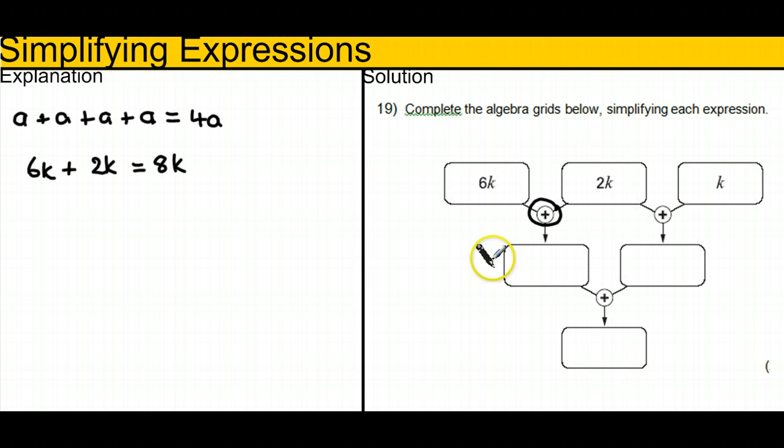Similarly, in the other box we've got 2k plus k, so we've got 2k plus a third k. We write that as 3k.